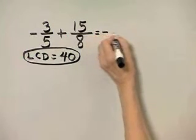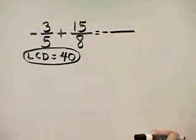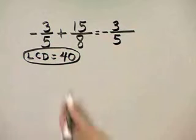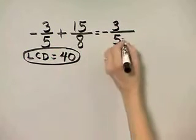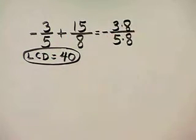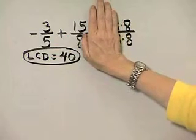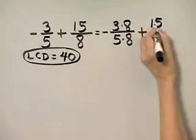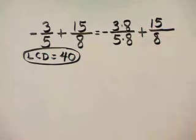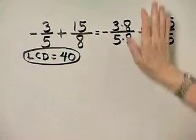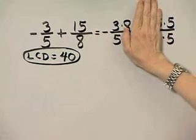Let's write each fraction as an equivalent fraction with a denominator of 40. 5 times what number gives a product of 40? 5 times 8 is 40. And if I multiply the denominator by 8, I must multiply the numerator by 8. Remember, that's the same as multiplying by 1, so I haven't changed the value. Then I have 15 over 8. Look in the denominator — 8 times what gives a product of 40? 8 times 5 gives a product of 40. So, multiply by 5 in the numerator. That's the same as multiplying by 1.